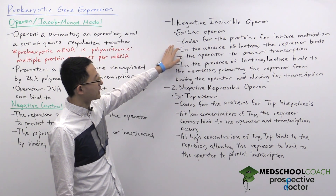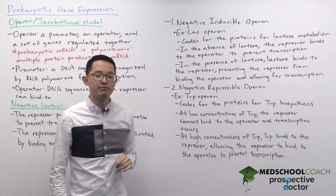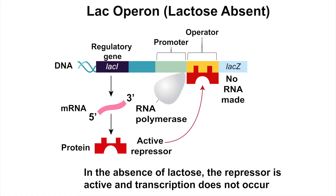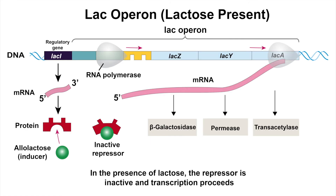The lac operon codes for the proteins for lactose metabolism. The operon is set up with a promoter, an operator, and then the genes for lactose metabolism. Initially, in the absence of lactose, the repressor protein is bound to the operator, which prevents RNA polymerase from transcribing the operon, so no mRNA is made. However, in the presence of lactose, lactose binds to the repressor, preventing it from binding to the operator. Now RNA polymerase is free to transcribe the operon, resulting in production of the enzymes for lactose metabolism.